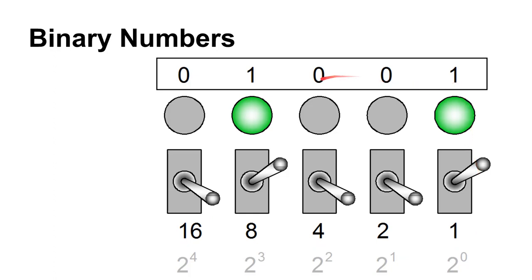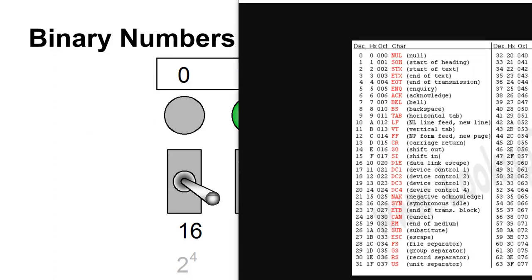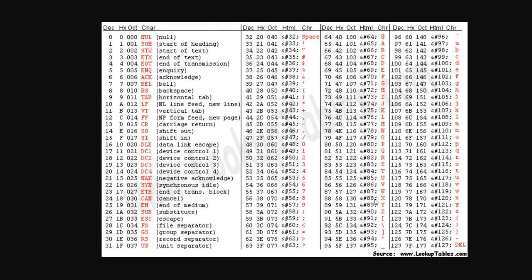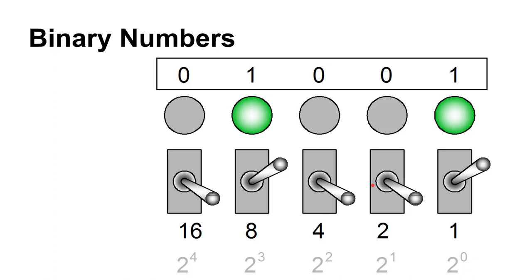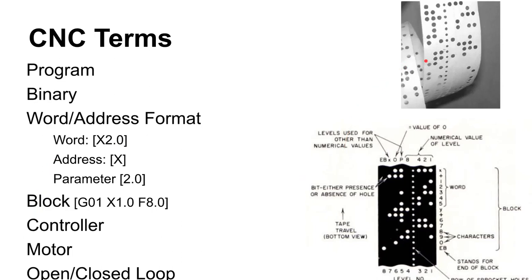Binary can represent not just the numbers 0 through 9 but also letters — for example, the number 88 corresponds to the letter X in ASCII. You can represent end-of-block characters, exclamation marks, any character you can type — as long as you agree beforehand that a certain number means a certain letter or character.